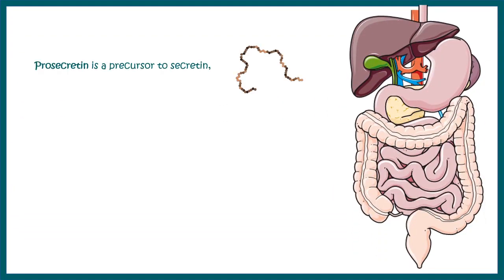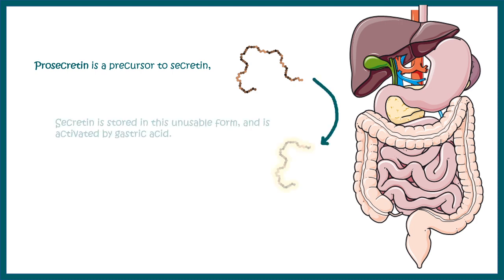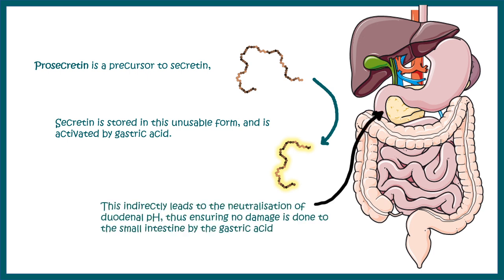Secretin generally exists in the pro-secretin format, which is an inactive form ranging around 145 amino acids. It gets cleaved to a 72 amino acid peptide, which is the active form, and it is activated by gastric acid. When the pH falls low, secretin gets activated and indirectly leads to neutralization of duodenal pH.